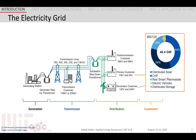In 2017, these distributed energy resources, or DERs, contributed up to 46.4 gigawatts of potential capacity in the U.S. grid. This is a huge amount and they can be leveraged to provide grid services.